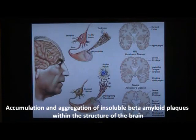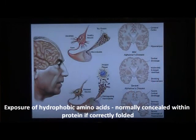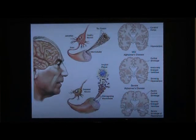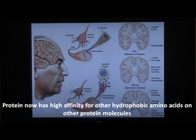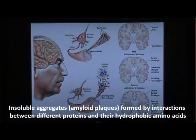Alzheimer's disease is a neurodegenerative disease in which insoluble beta-amyloid plaques accumulate and aggregate within the structure of the brain. These plaques occur due to protein misfolding, which leads to exposure of hydrophobic amino acids that would normally be concealed within the protein if correct folding took place. This exposure of water-repelling amino acids causes the protein to have a high affinity for other hydrophobic amino acids and other protein molecules, creating insoluble aggregates called amyloid plaques, which are very toxic to neurons.